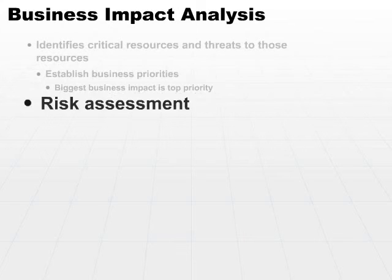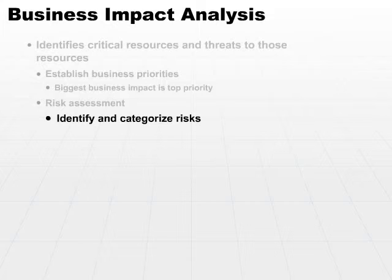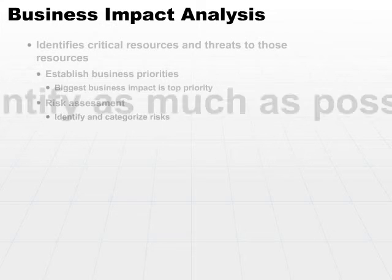The next step is risk assessment — identify and categorize risks. When you identify all the risks that can threaten each one of your business priorities or processes, you want to identify the threats and then categorize them: big threat, medium threat, and little threat.